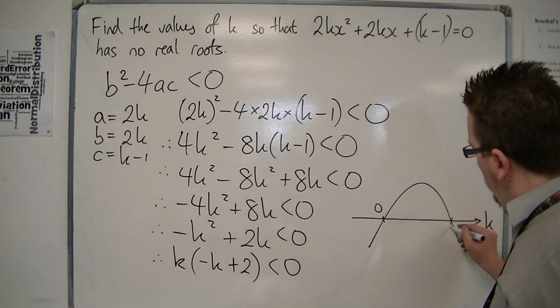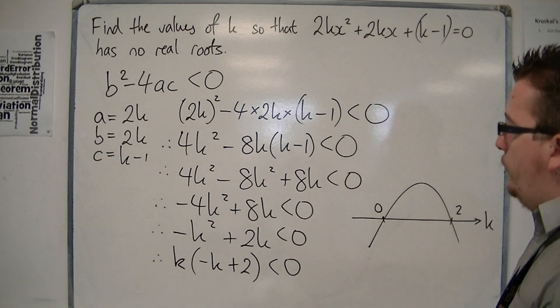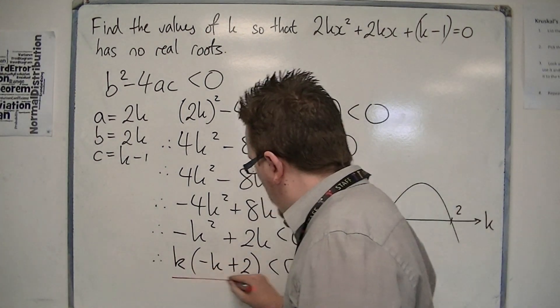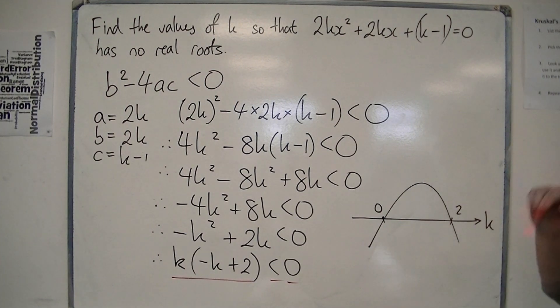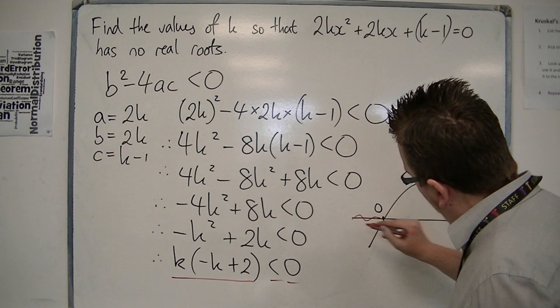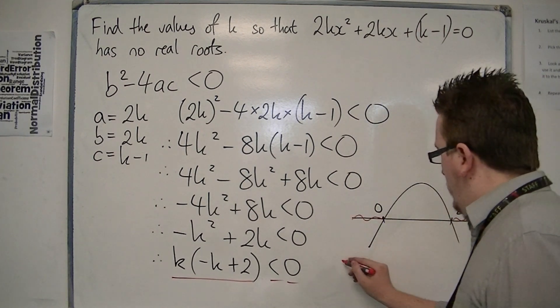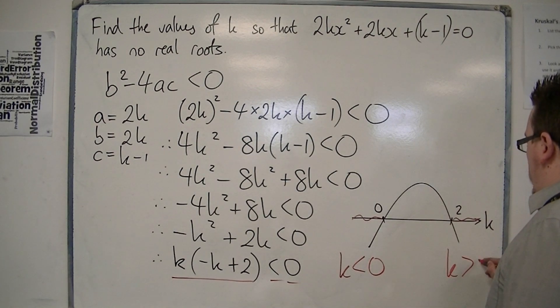Crossing at 0 and 2. We're being asked where the parabola is below the k-axis, and it is below it here and here. k is less than 0 and k is greater than 2.